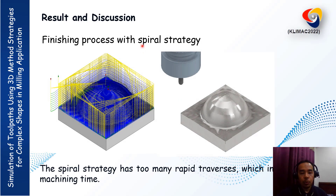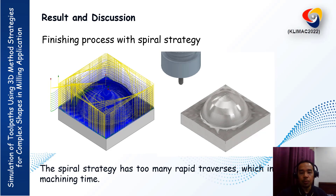Here we have the Spiral strategy. We can see that in the Spiral strategy there are too many yellow color movements, meaning that many rapid traverses are used in this strategy. This will increase our machining time.